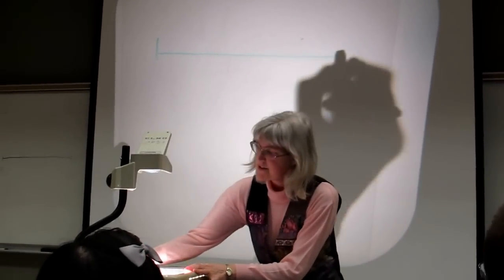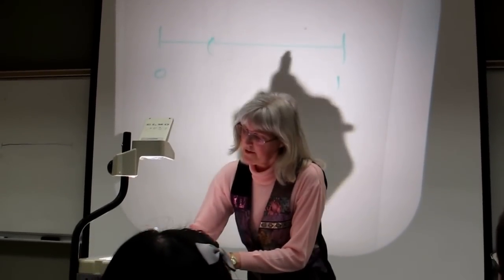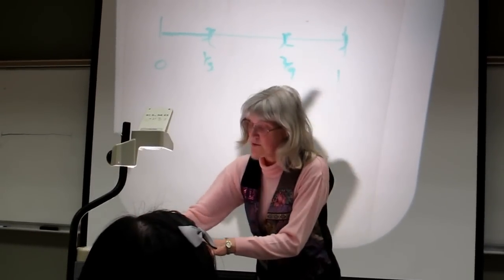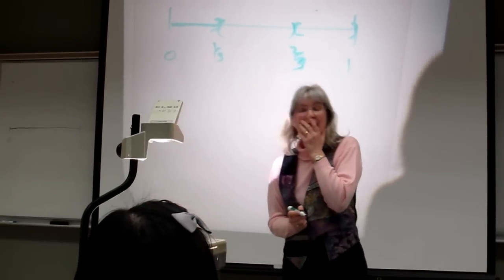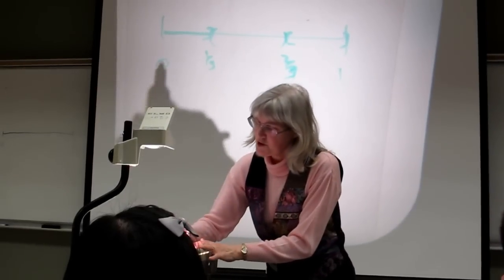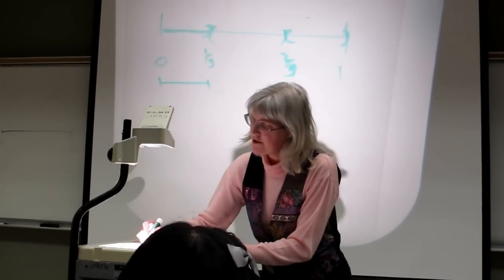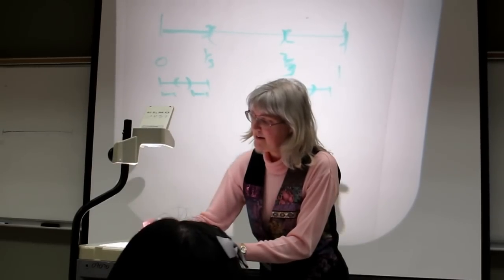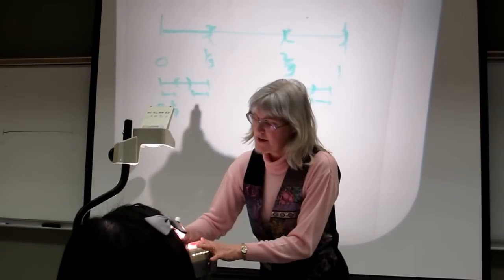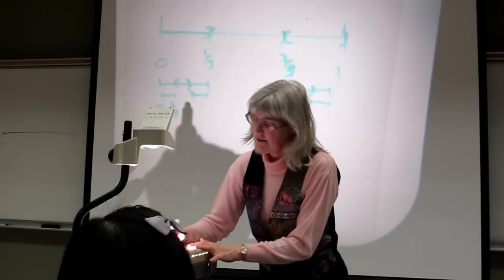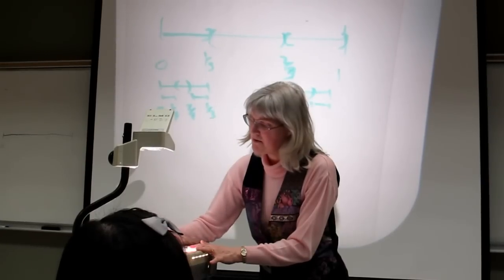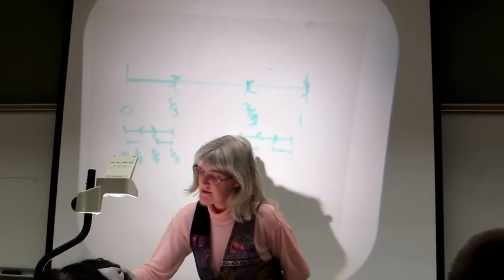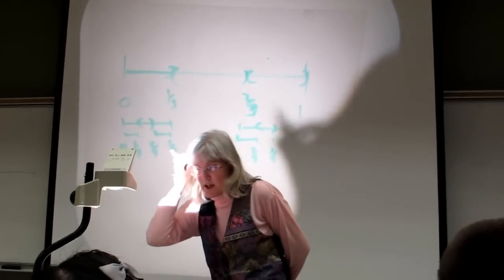After removing the middle third, we're left with two closed intervals: [0, 1/3] and [2/3, 1]. Then we repeat the process — remove the middle third of each interval and keep the two outer intervals. Now we have four intervals: [0, 1/9], [2/9, 1/3], [2/3, 7/9], and [8/9, 1], and so on.